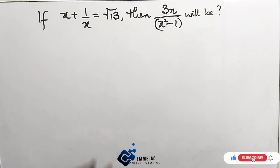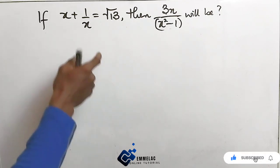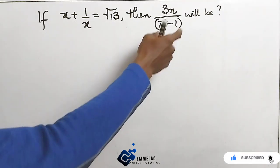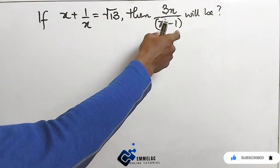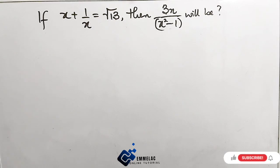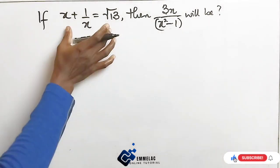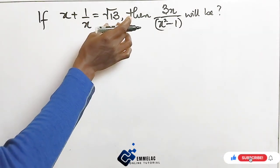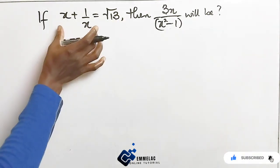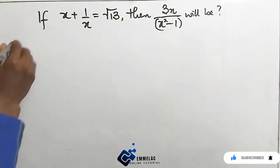Alright. We are told to resolve this to get this, and here we are given a value. So how do we start? First of all, let us eliminate this square root from 13, and by so doing we have to square both sides.